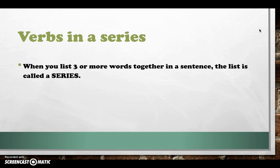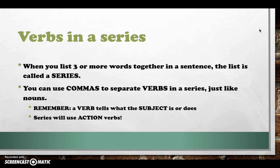Verbs in a series. When you list three or more words together in a sentence, the list is called a series. This is just like yesterday with the nouns. You can do a series with nouns or verbs. However, you need to make sure you have three nouns or three verbs or four nouns or four verbs or a million nouns or a million verbs, not just two.